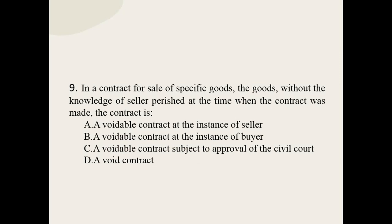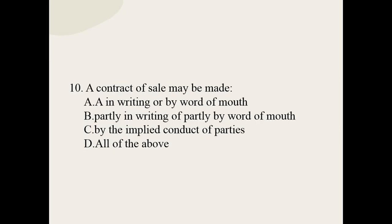Q9: In a contract for sale of specific goods, the goods without the knowledge of the seller perished at the time when the contract was signed. The contract is: a valid contract at the instance of the seller; a valid contract at the instance of the buyer; a valid contract subject to approval of the civil court; or void. The correct option is void — it is not a valid contract.